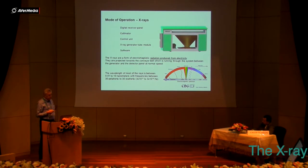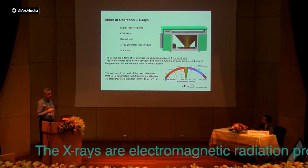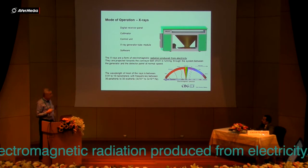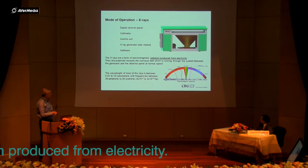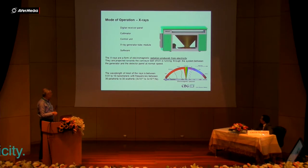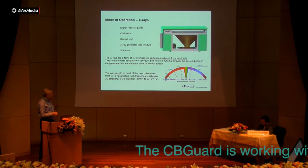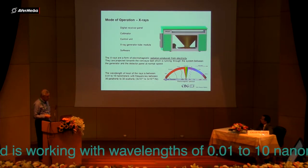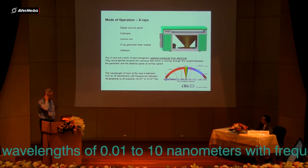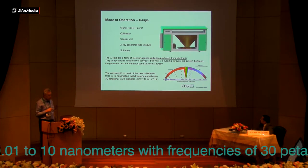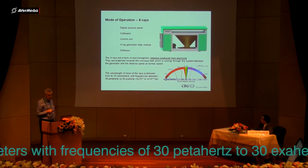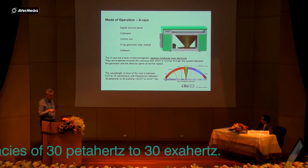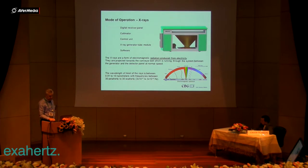X-rays are electromagnetic radiation produced from electricity. We can see the spectrum here, which includes radio waves, microwaves, visible light, and the X-ray range that we are using — with a wavelength of between 0.01 to 10 nanometers and frequencies between 30 petahertz and 30 exahertz.